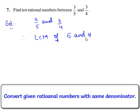Since 5 and 4 do not have any factor in common, therefore the LCM of 5 and 4 is their product, that is 5 times 4 which is equal to 20.